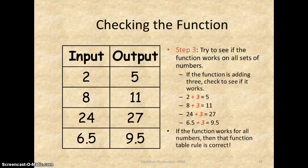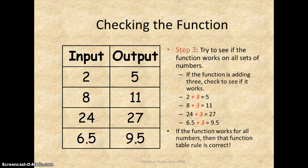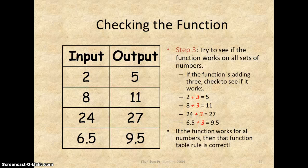Here's just the checking of it. You're looking at 2 plus 3 equals 5, 8 plus 3 equals 11, and so forth. Make sure that it works for all of the numbers in the columns. If you don't, then something's wrong with your function rule and you have to go back and start over.